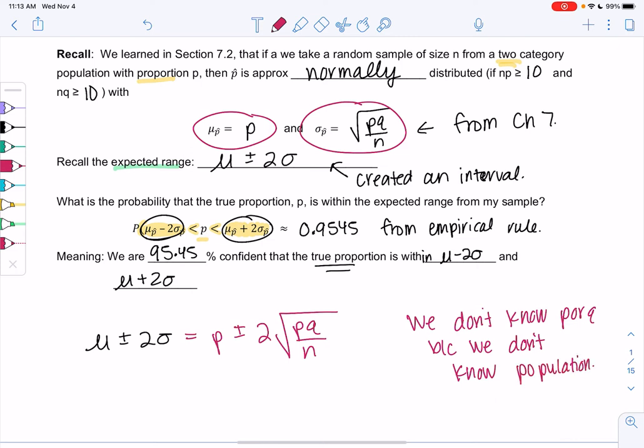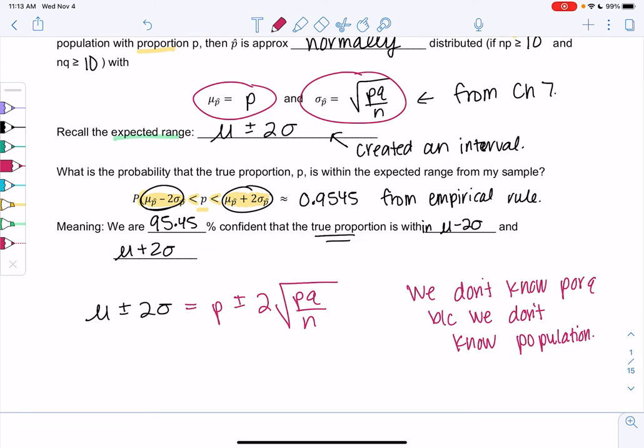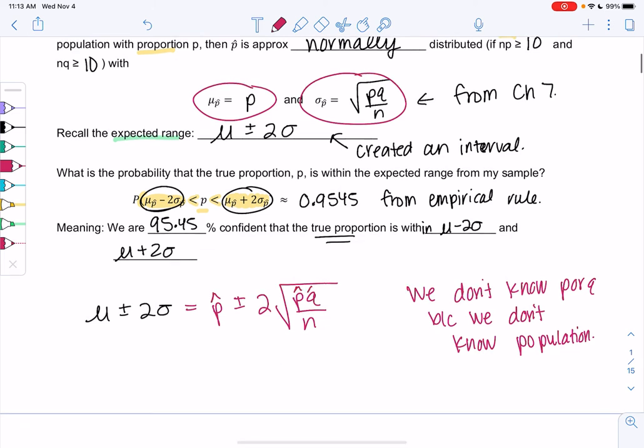So if we don't know p, what's a good value to use to estimate p? That would be p hat. So we'll just estimate with p hat and q hat. And that is my formula for a confidence interval.